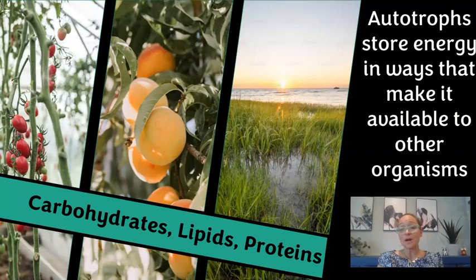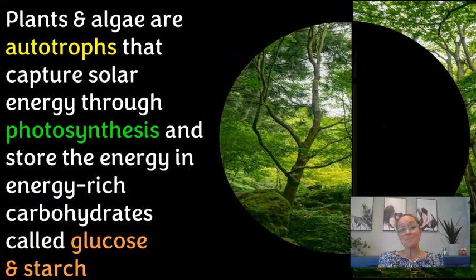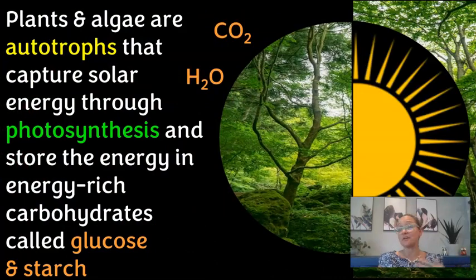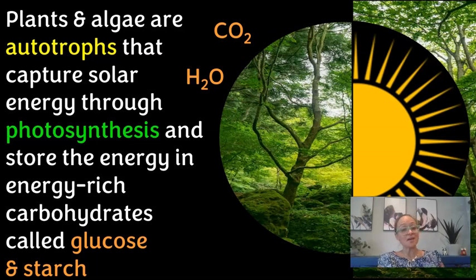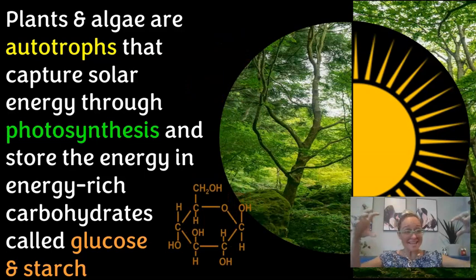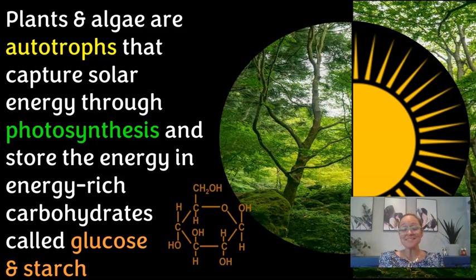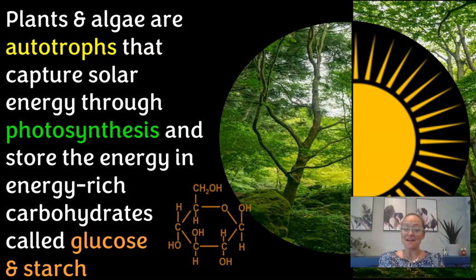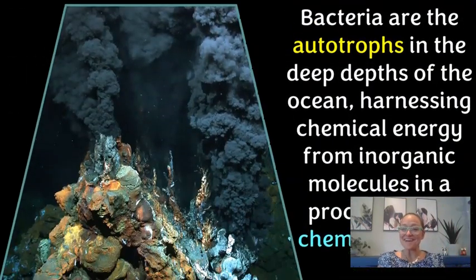Through photosynthesis, autotrophs build macromolecules — carbohydrates, lipids, proteins, and nucleic acids. Carbohydrates and lipids are our primary sources of energy. Plants, algae, phytoplankton, and cyanobacteria convert carbon dioxide and water using solar energy to produce glucose, starch, and lipids. That energy is stored in the bonds of those molecules, and when we eat them, our mitochondria break them down to release energy.